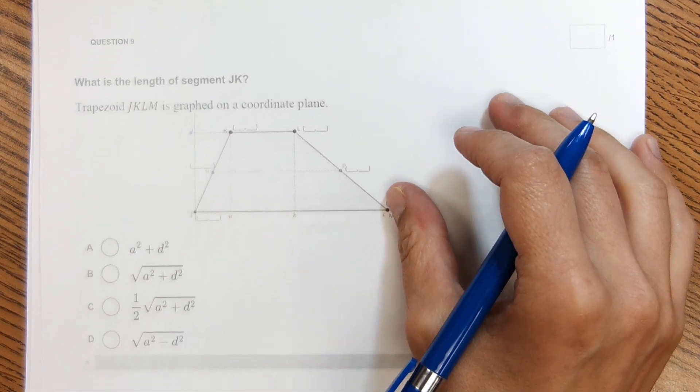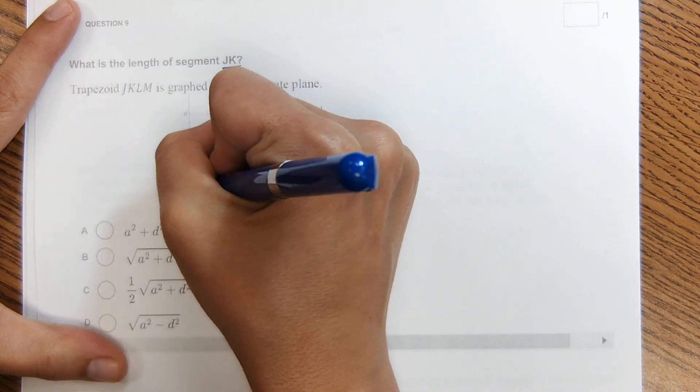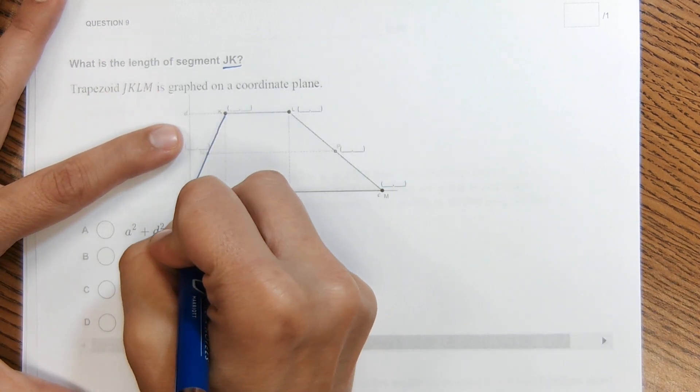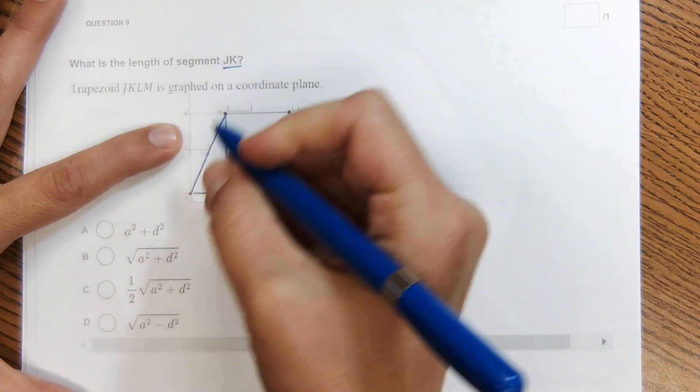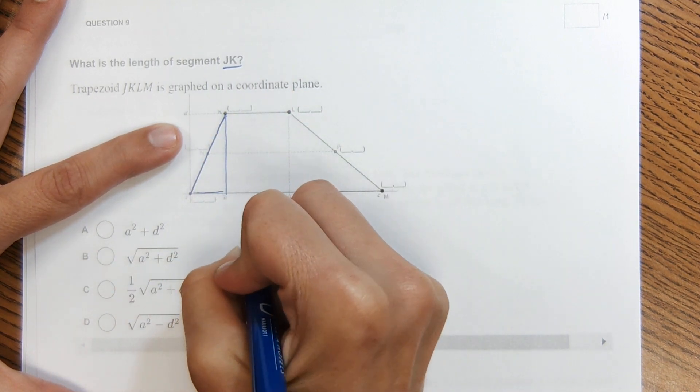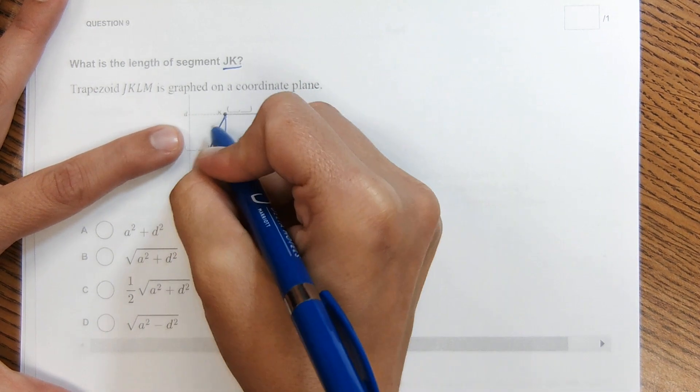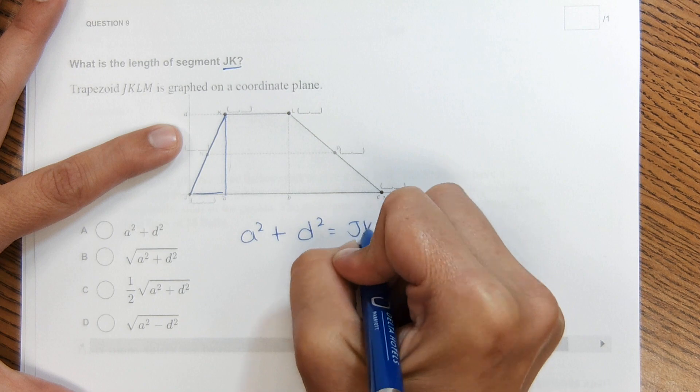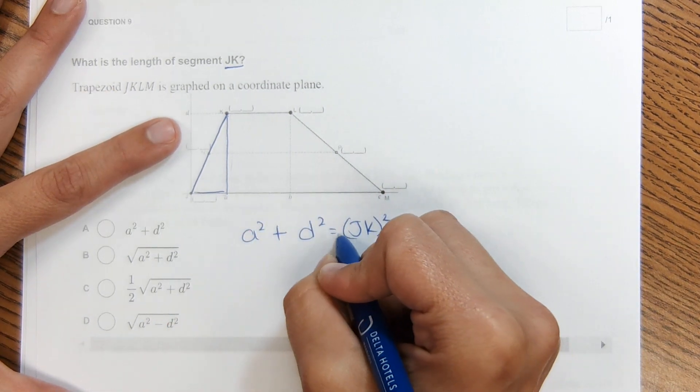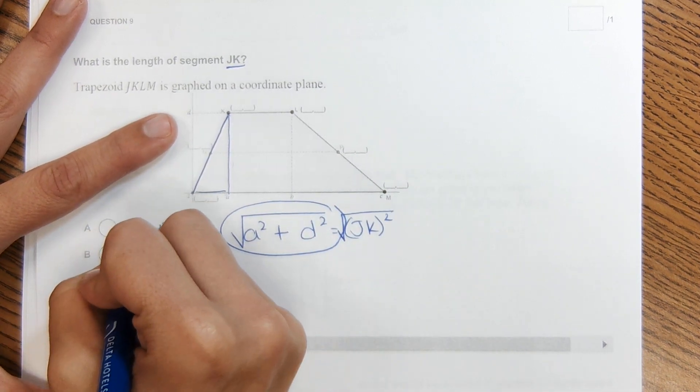Okay, next one. This one, it says, what is the length of JK? So this segment right here. And again, we're not dealing with numbers, we're dealing with letters. So we are actually going to use Pythagorean theorem. So a squared plus b squared equals c squared. And this length right here is a, so a squared plus this length, which is d squared, will equal the length of this segment JK, and that'll be squared. So then to find that length, we have to take the square root of both sides. And this is the answer to that problem.